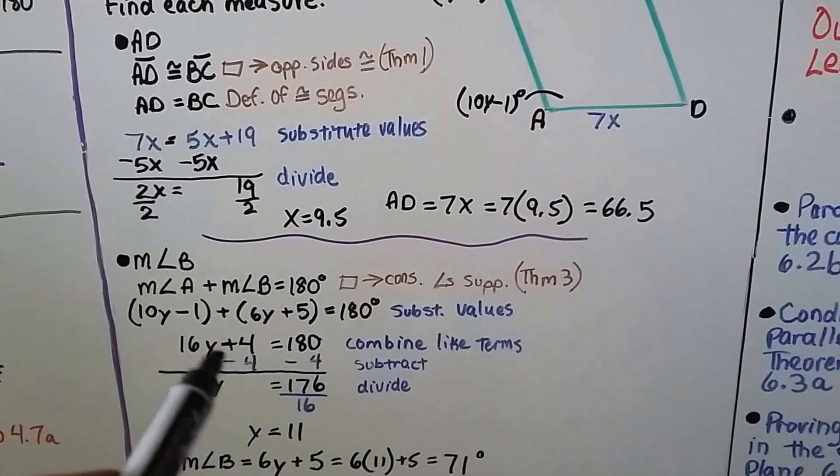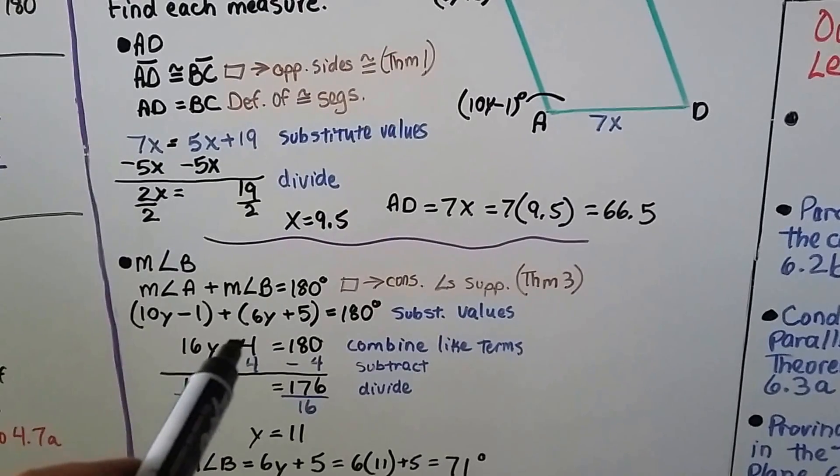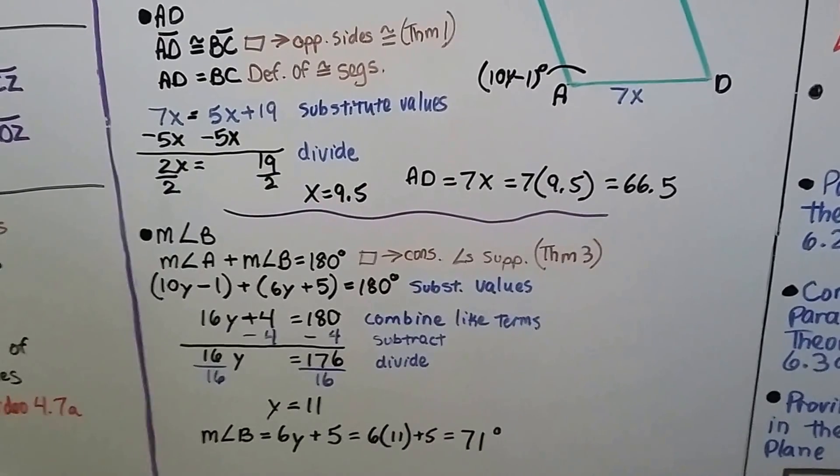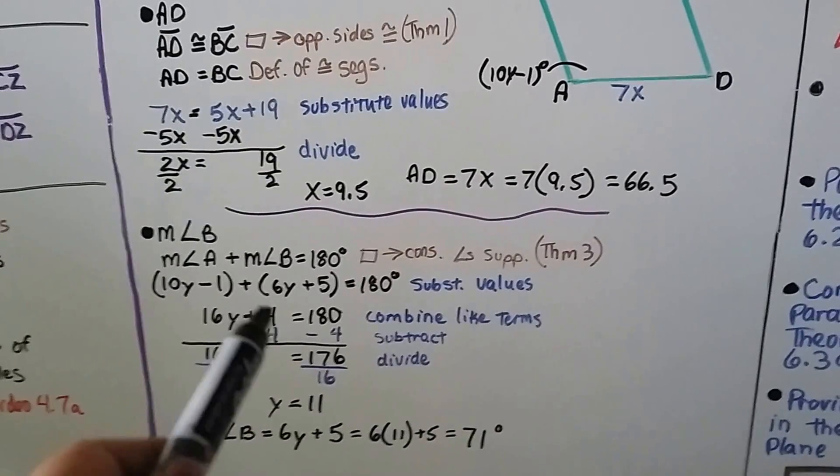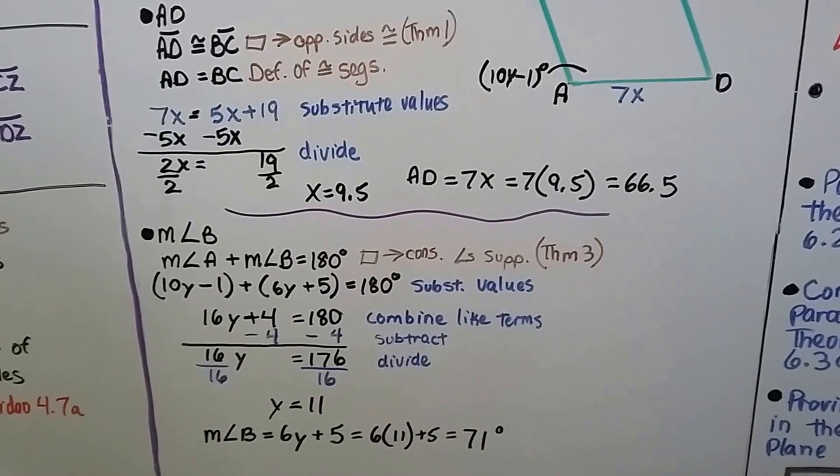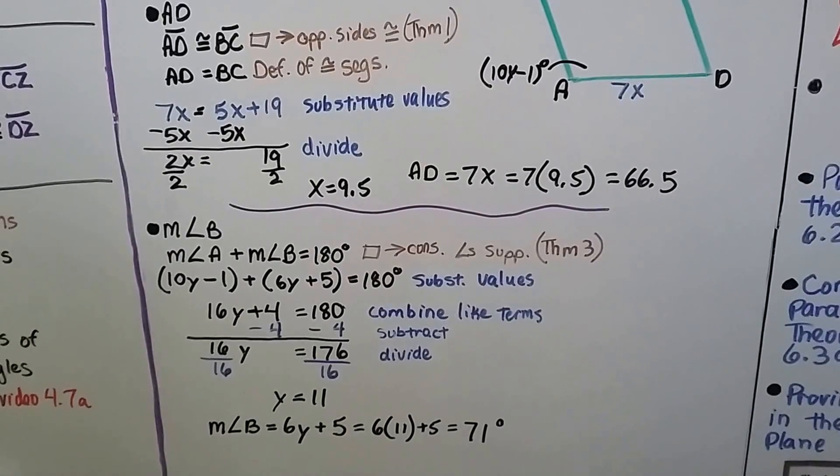And we have a minus 1 plus 5 and we have a 10y and a 6y. So we're going to have a 16y plus 4 when we combine like terms. And we have them set to equal 180. We can get rid of this plus 4 here by subtracting 4 from each side. And we get 16y equals 176. We divide by the coefficient 16 and get y is equal to 11.